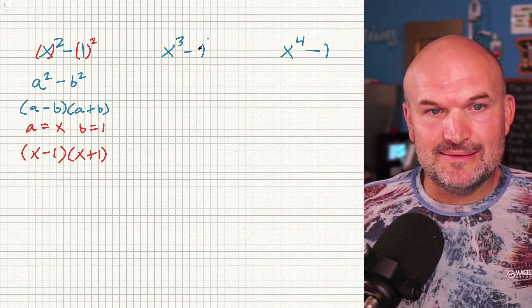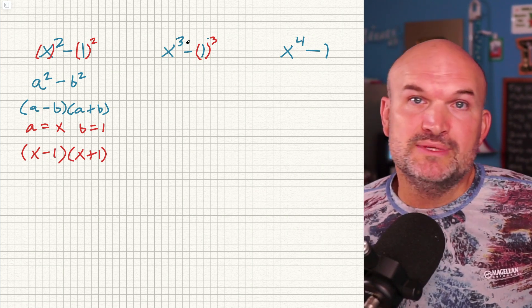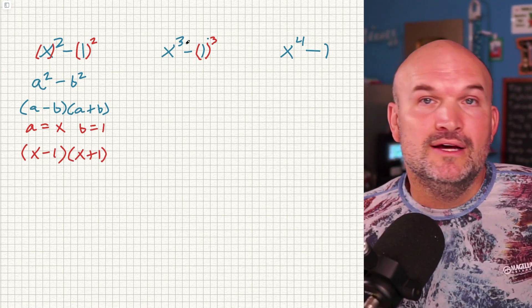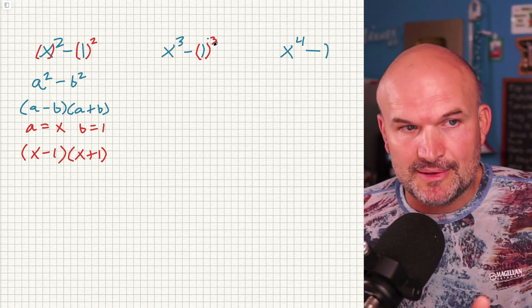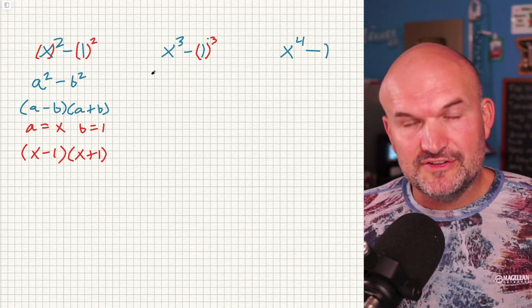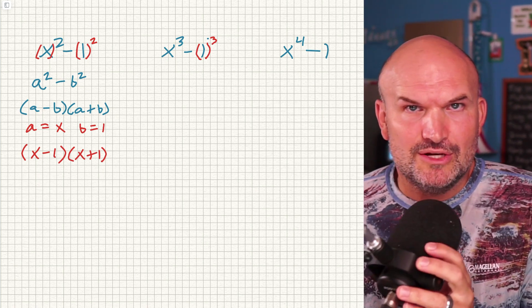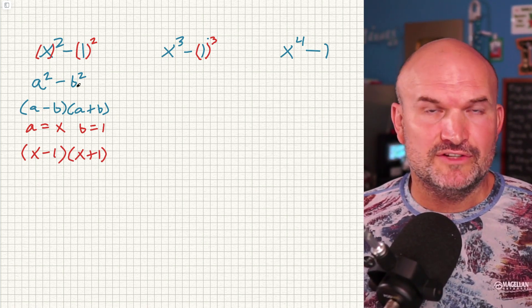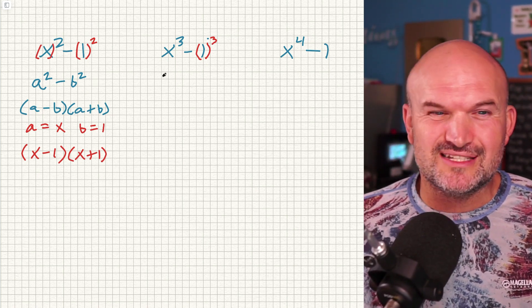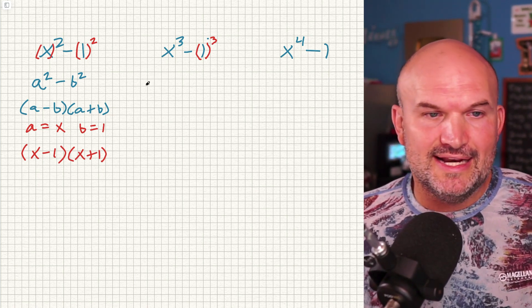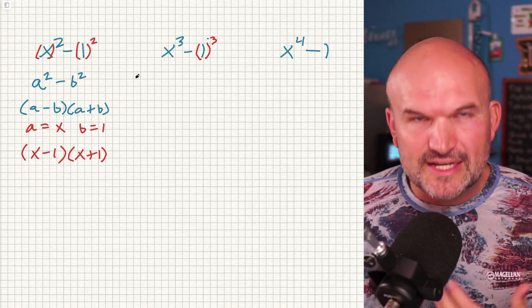Now let's get to the difference of two cubes. A lot of times students will recognize that 1 can be rewritten as a cube number — just like 8 is 2 cubed, 27 is 3 cubed, 64 is 4 cubed. So look for those cube numbers. Unlike the difference of two squares, the difference of two cubes has a formula that is a little bit more difficult to remember. I get it — it doesn't come up as often, but if you're going into pre-calculus and calculus, it's important to have that in your back pocket.